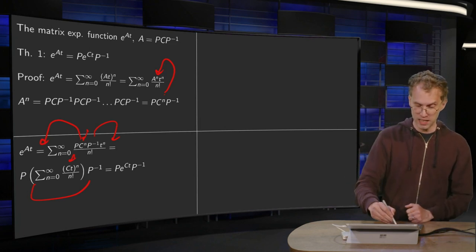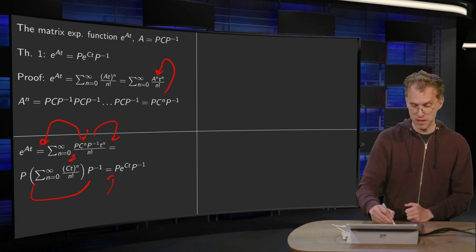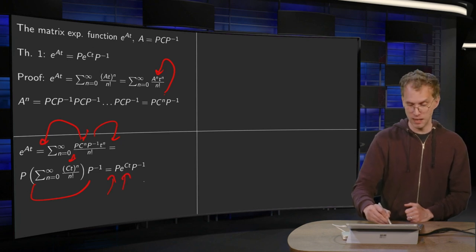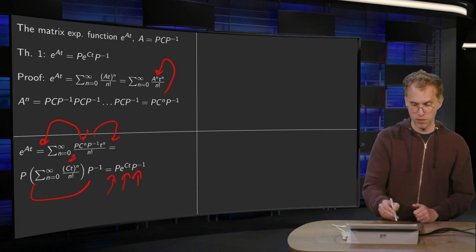So e to the power at, what we're left with is a P times e to the power ct times P inverse. So that proves our theorem.